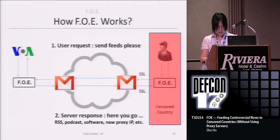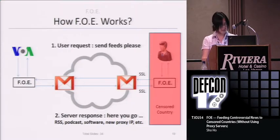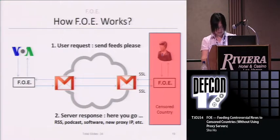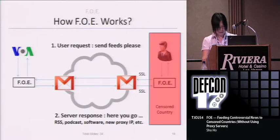Note that the connection between the client and its mail server should be SSL encrypted. This is necessary in order to bypass the censor's packet filtering. When the FOE server, shown on the left side of the graph, receives the request, it will download the requested RSS feeds for the client and then email them back to the client's email address. When the client receives the reply message, it will verify the content and then display the feeds on the client's screen.